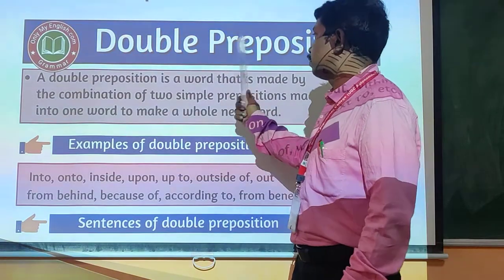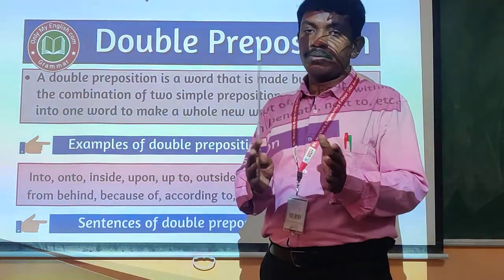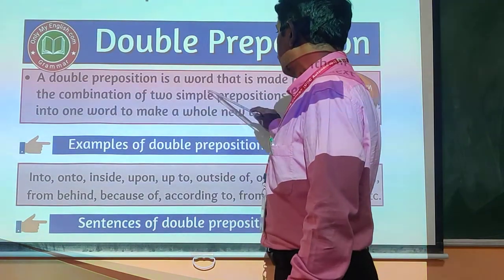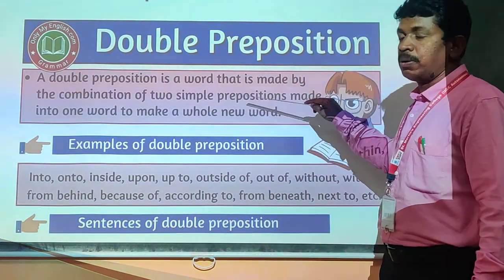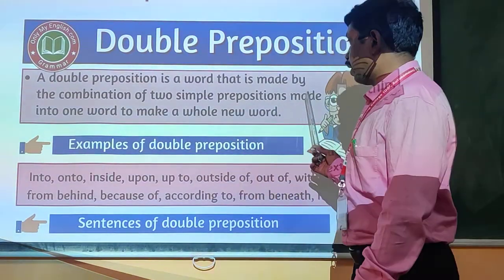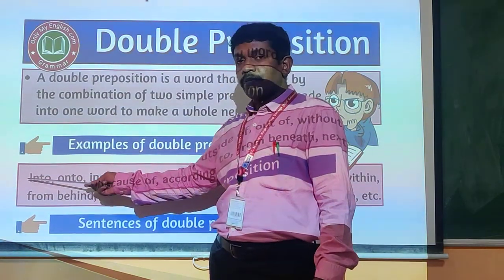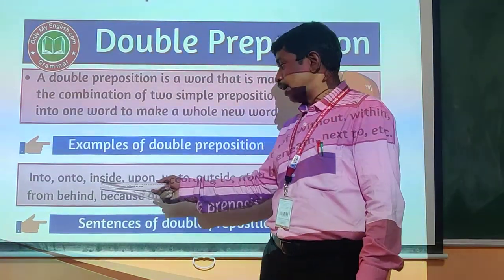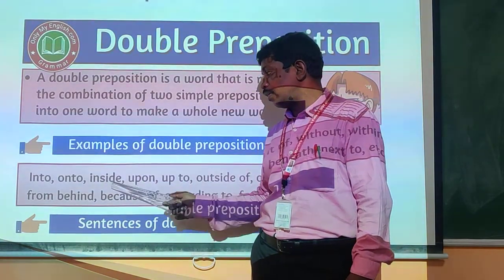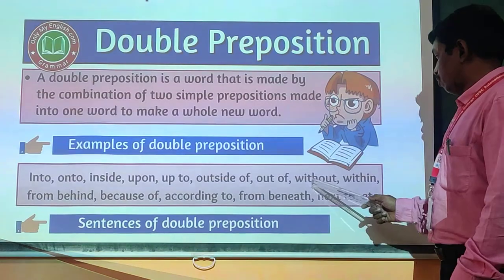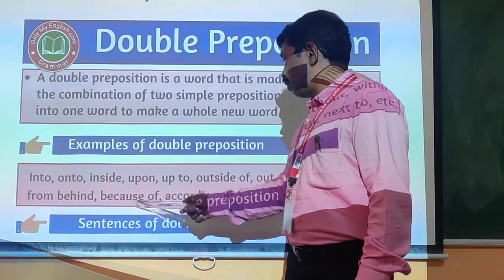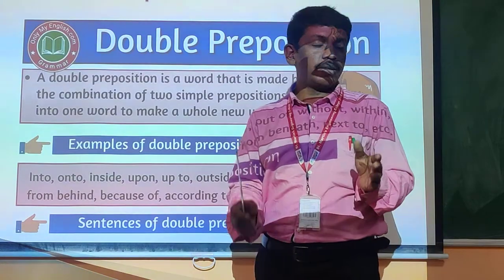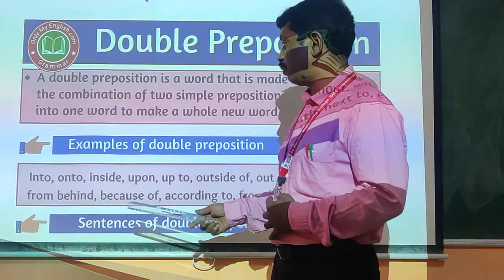The second type is double prepositions. What is a double preposition? Two prepositions come together. A double preposition is made by the combination of two simple prepositions. Two simple prepositions come together as one preposition — that is a double preposition. Examples: 'in' plus 'to' makes 'into'; 'on' plus 'to' makes 'onto'; 'inside', 'upon', 'up to', 'outside', 'out of', 'without', 'within', 'from behind', 'because of', 'according to', 'from beneath', 'next to' — these are all double prepositions.